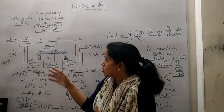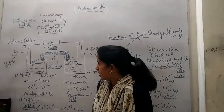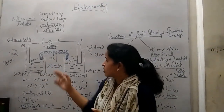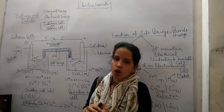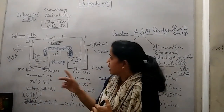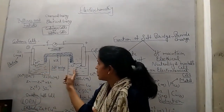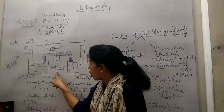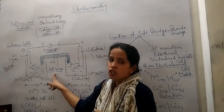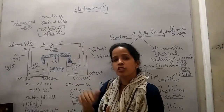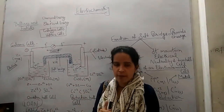So why does it happen that the bulb stops glowing? Here I will explain the function of the salt bridge. I have connected these two containers by the salt bridge. So what is the function of the salt bridge here?